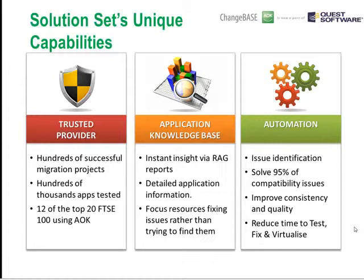We provide a great deal of automation, so rather than doing something manually, the tool does that work for you and lets your valuable packaging resource focus on the real problems that need fixing manually. For Windows 7, 95% of the issues we find we can fix automatically. As well as automatically fixing applications, we can also help you automatically sequence applications to virtual platforms.